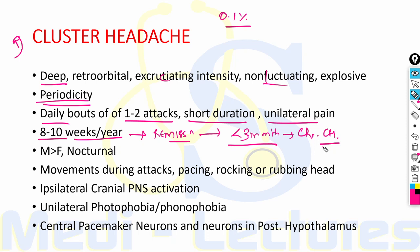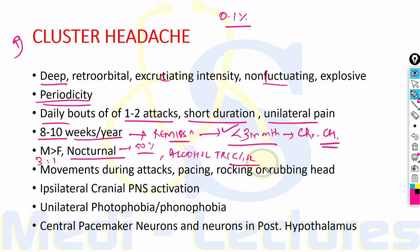If remission is less than 3 months without treatment, it is known as chronic cluster headache. Remission is usually 9 to 10 months; if only less than 3 months per year, it is chronic cluster headache. Male to female ratio is 3:1. Nocturnal episodes occur in about 50% of cases. Alcohol is an important trigger; males having alcohol-triggered nocturnal headache strongly suggests cluster headache. There are movements during attacks like pacing, rocking or rubbing the head — unlike migraine where the patient sits silent and movement aggravates pain.